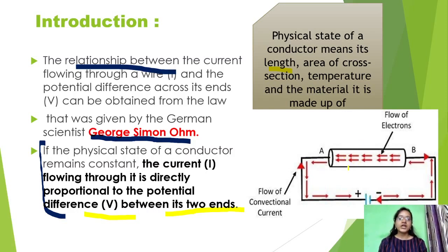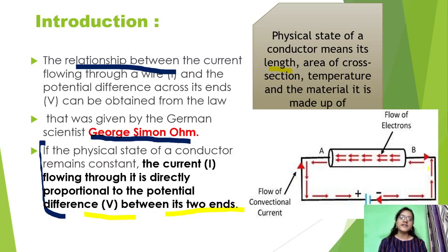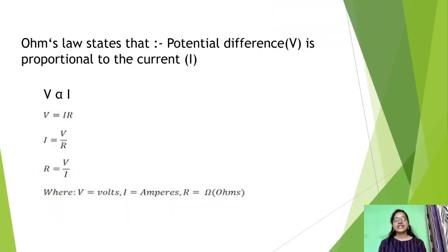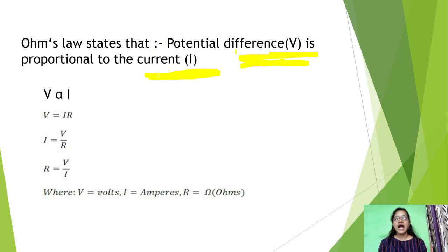So what will happen here? This is the circuit. The current flows from positive to negative, while the electrons flow from negative to positive. So the current flow, represented as I, is proportional to the potential difference, that is V. We can represent this symbolically: V is proportional to I.